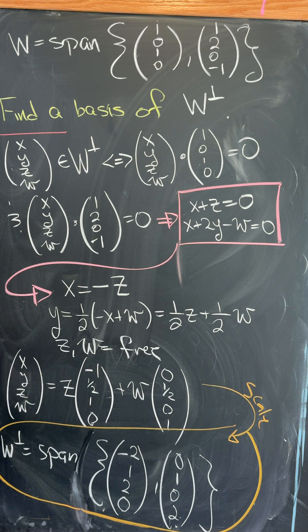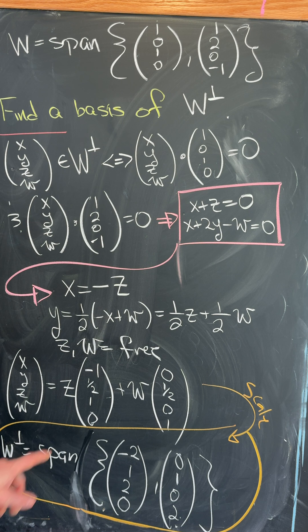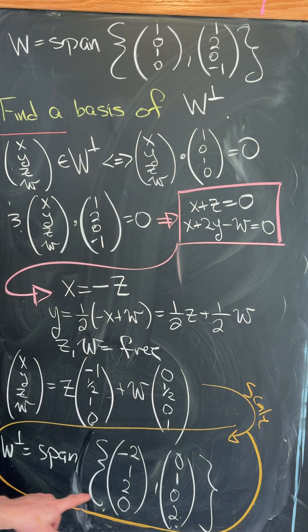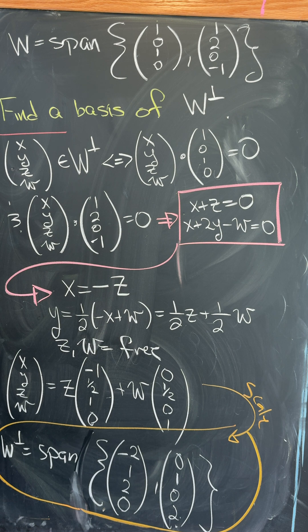That means our element of the orthogonal complement is a linear combination of these two vectors. We can scale this to get a basis: (-2, 1, 2, 0) and (0, 1, 0, 2).